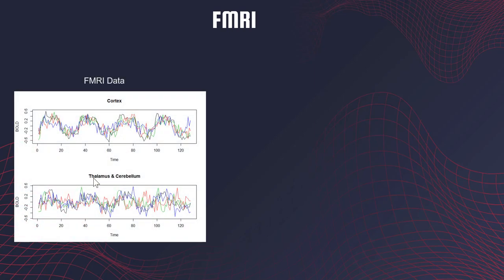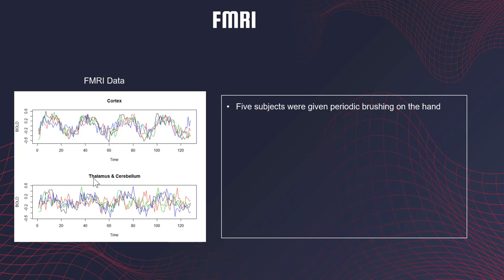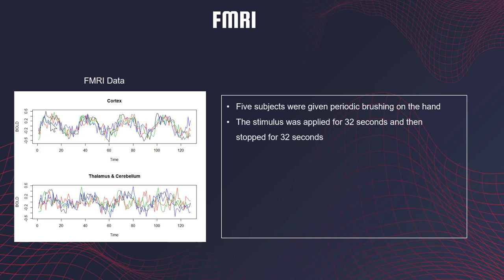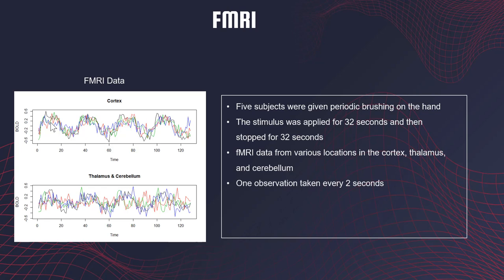Another application is fMRI studies. In one experiment, five subjects were given periodic brushing of their hands. Recordings for each of the five people are shown in different colors on these graphs. The stimulus was applied for 32 seconds and then stopped for 32 seconds, with observations taken every two seconds from different brain regions: cortex, thalamus, and cerebellum. The time series from the cortex looks different from the thalamus and cerebellum — periodicities are stronger in the cortex.